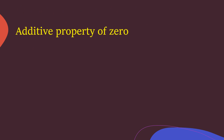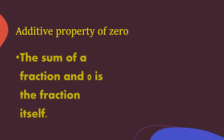The next property is the additive property of zero. When you add 0 to any number — whether it is a whole number, natural number, or a fraction — you get the same number again. The sum of a fraction and 0 is the fraction itself. For example, 3 and 1/5 plus 0 gives you 3 and 1/5 again. In a fill-in-the-blank question, if a fraction is added to a blank and gives the same fraction, then 0 will go in the blank.